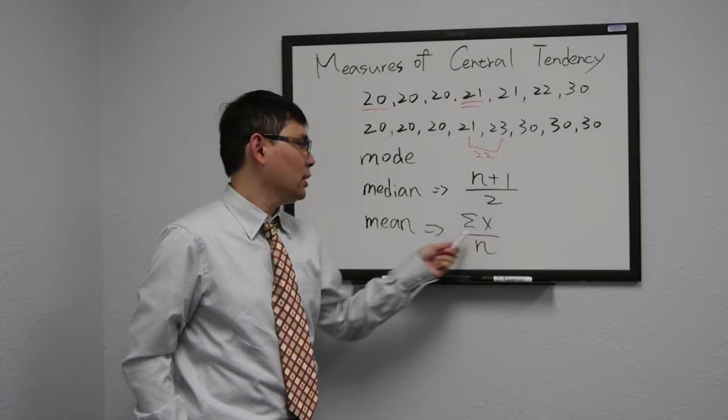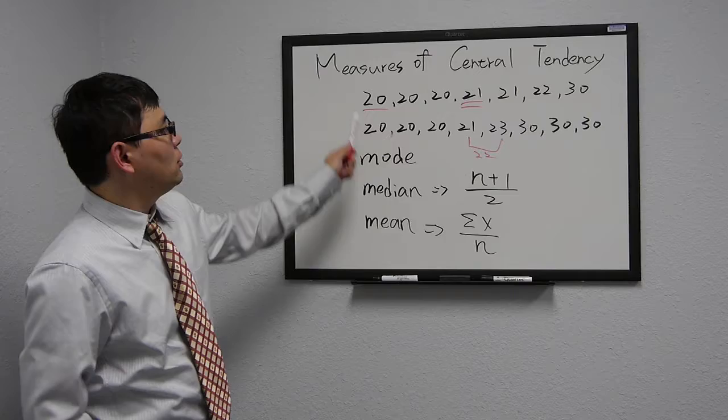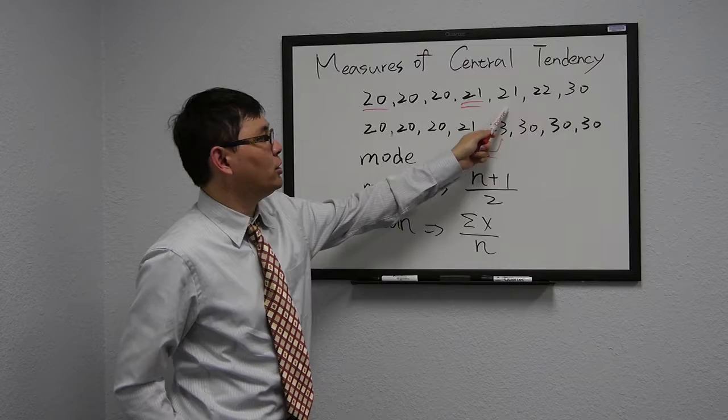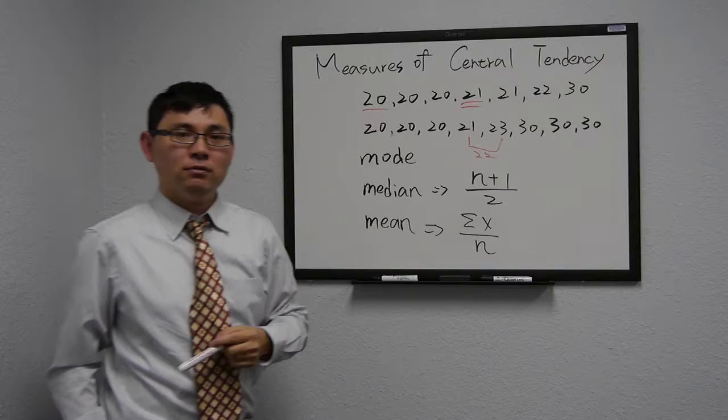So let's use the first group of numbers again. The mean will equal 20 plus 20 plus 20 plus 21 plus 21 plus 22 plus 30, divided by 7. And that is 22.